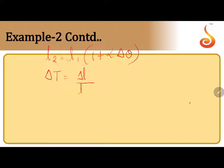change in length divided by original length into alpha. We know the values of change in length: that's 0.03 centimeter divided by 10 centimeter into 12 into 10 to the power minus 6.